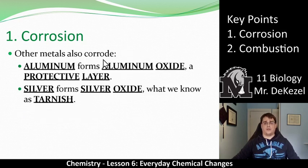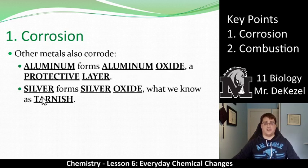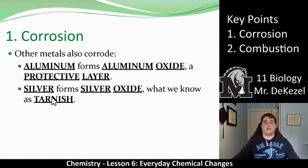Other metals that can corrode — or rust, quote unquote — would be aluminum, which forms aluminum oxide. After aluminum oxide is formed, it acts as a protective layer, so it doesn't flake off like rust does. Silver forms silver oxide, which is what we know as tarnish — a yellowy, greeny look on silver. You might have seen it on silver cutlery that's been sitting out for a while. The oxygen puts a layer of silver oxide onto it, and that is tarnish. So other metals also corrode.